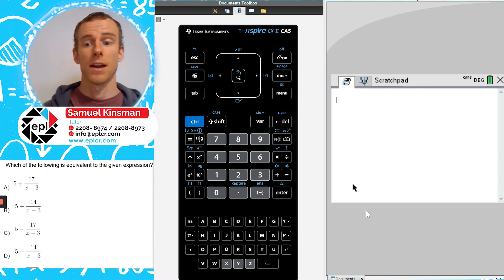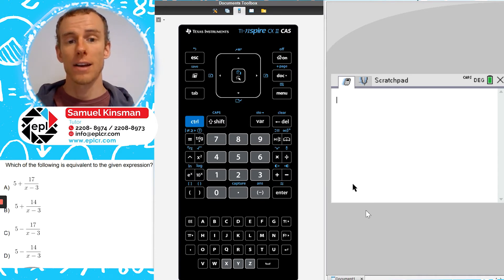Notice that our fraction has an x in the numerator and in the denominator, and our answer choices all have a 5 by itself without an x in the denominator, without an x below it. That means we have to do synthetic division.